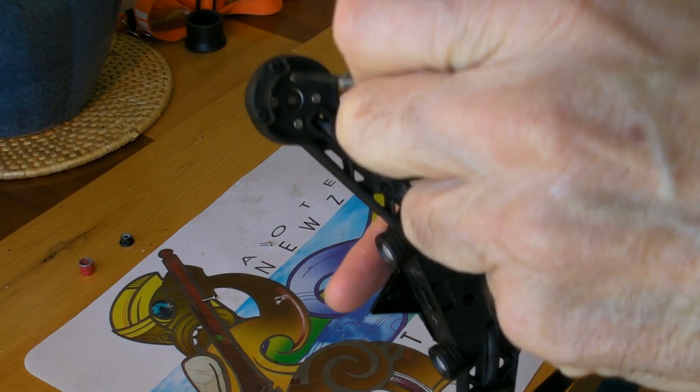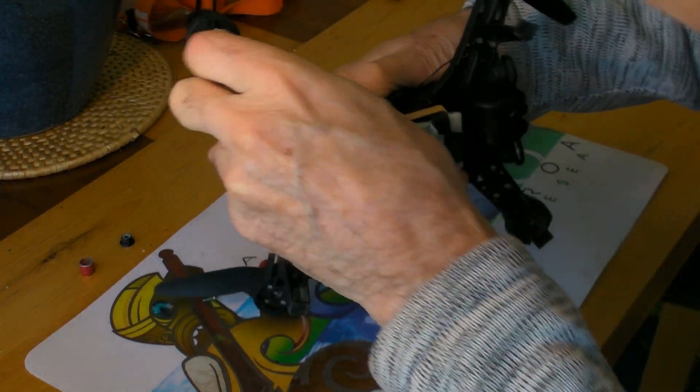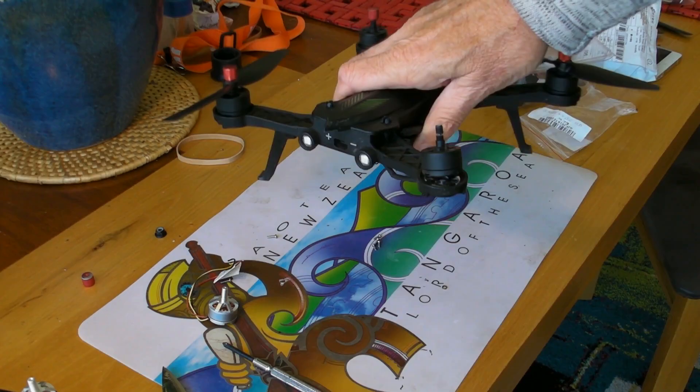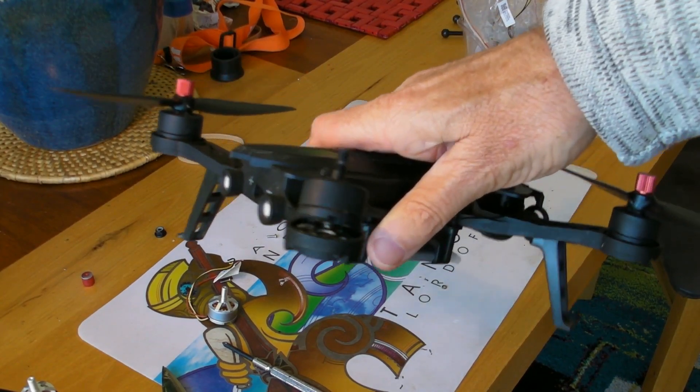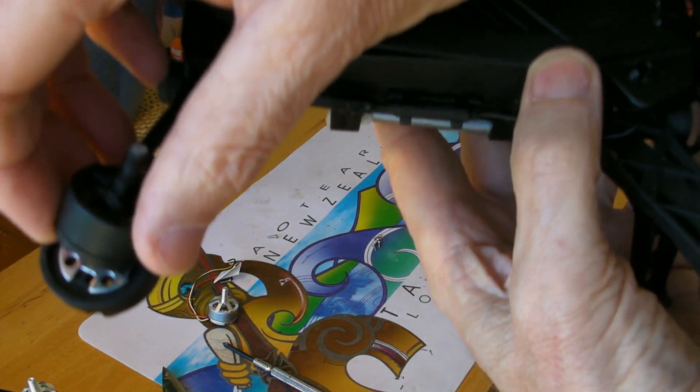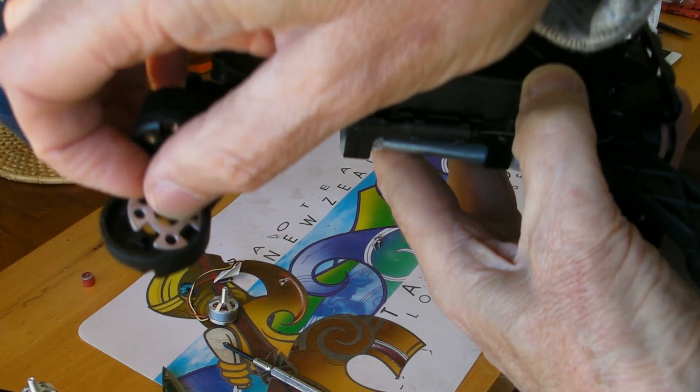Then the next step was to unscrew the four screws that hold the motor onto the holder. Turns out there's a metal base plate underneath the motor. So this is what happens once I've got the screws out. You can see the metal base plate there that's separate from the motor.